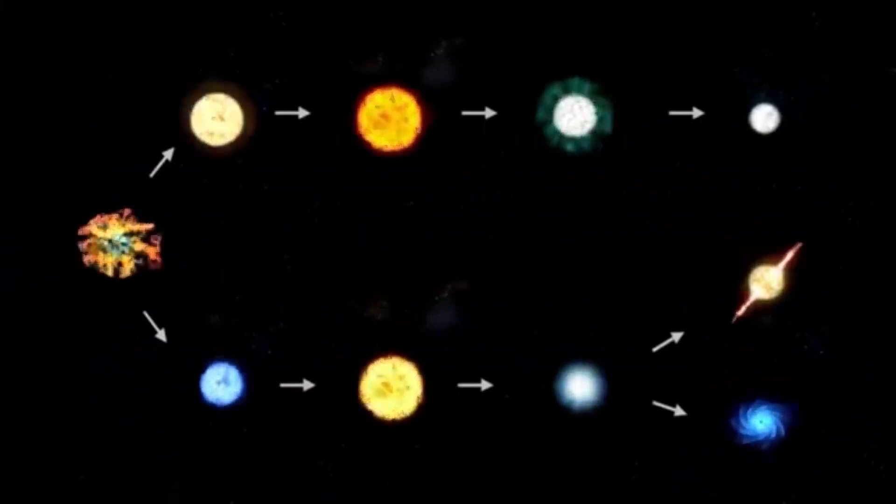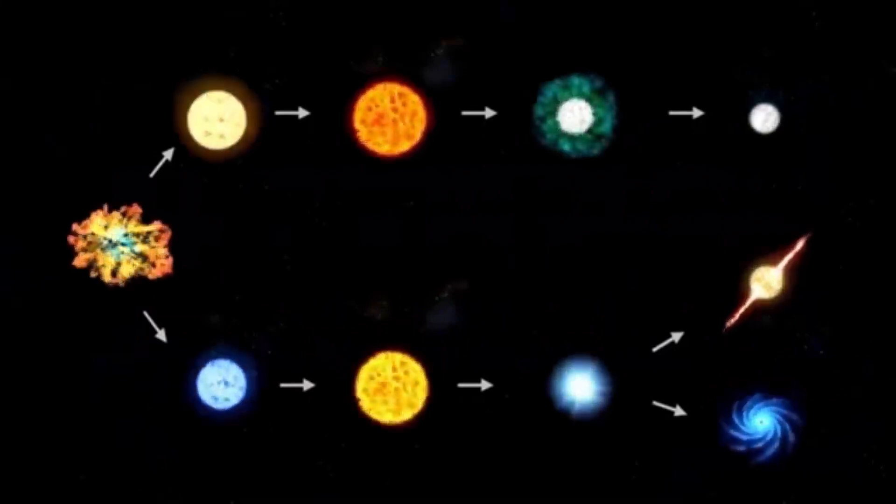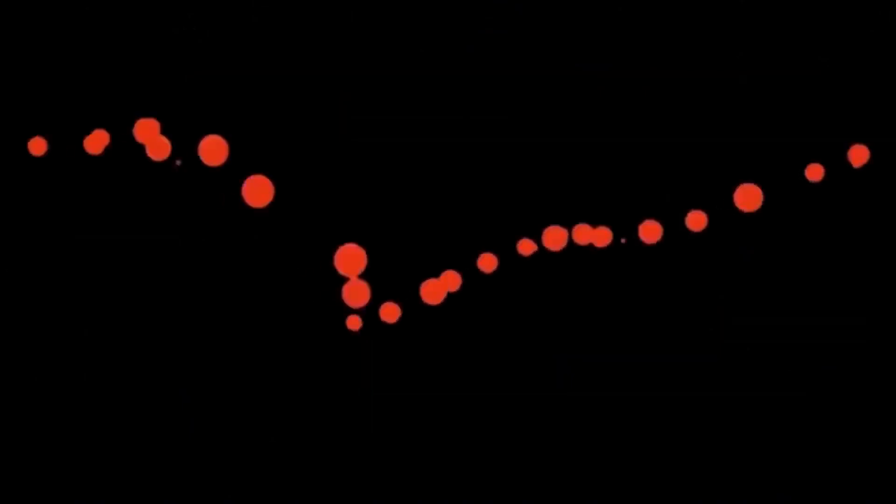For the first time ever, astronomers are observing the actual physics of a star tearing itself apart. This isn't a simulation, it's the real-time anatomy of a supernova, and it's happening just 642 light-years from Earth.